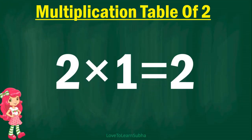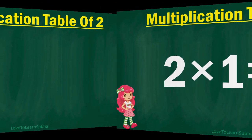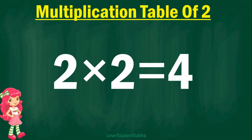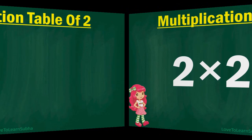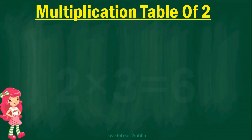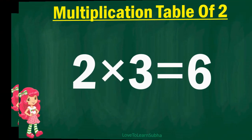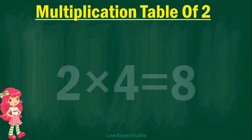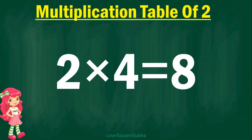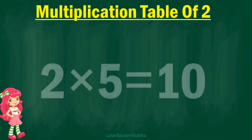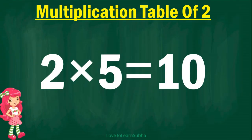2 1s are 2, 2 2s are 4, 2 3s are 6, 2 4s are 8, 2 5s are 10,